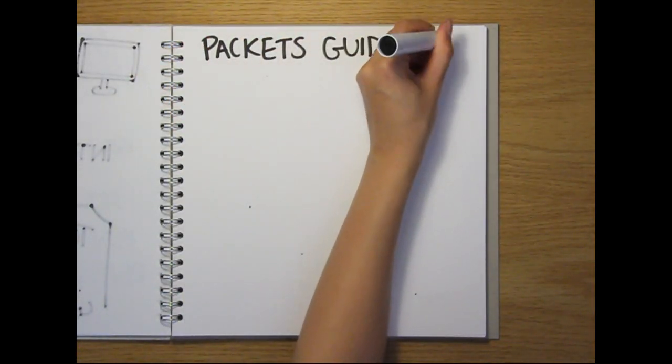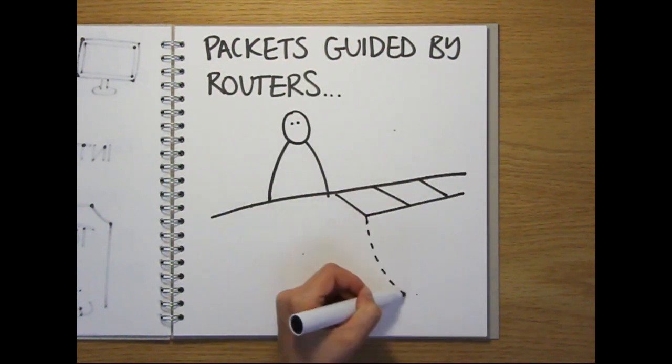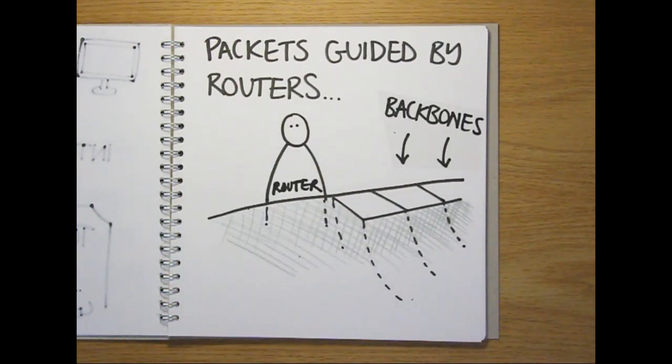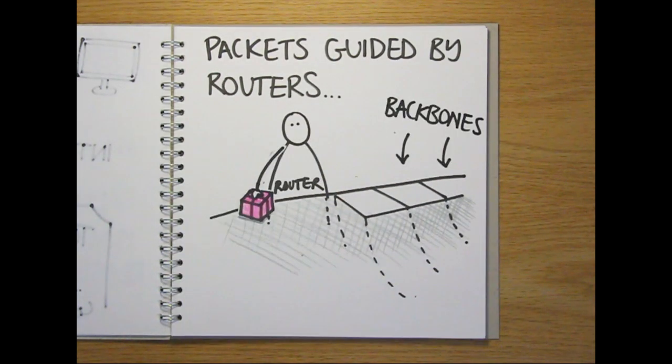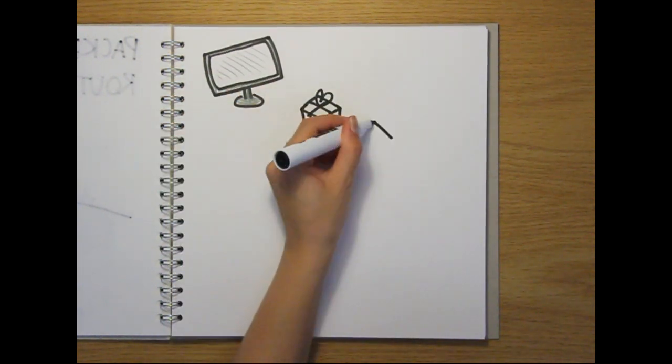Each packet is guided to its destination address through the internet by a series of specialized computers called routers. These routers are the internet equivalent of staff in the post offices and sorting offices. They look at each packet of data, read the destination IP address, and make sure that that packet then gets put into the right backbone connection for its destination. This process is then repeated until each of the packets gets where it needs to go.